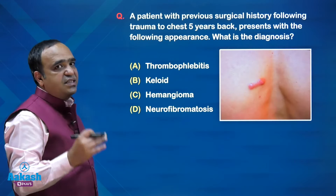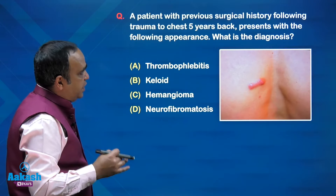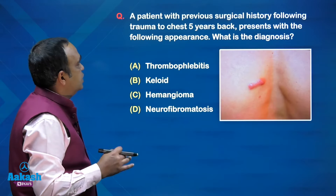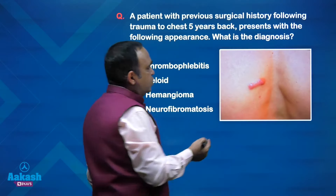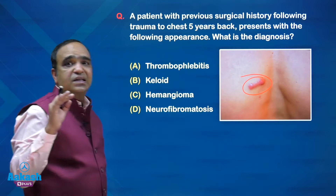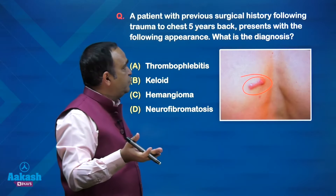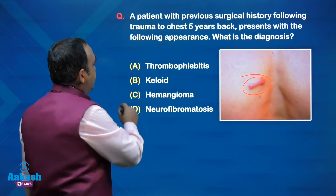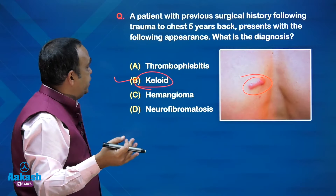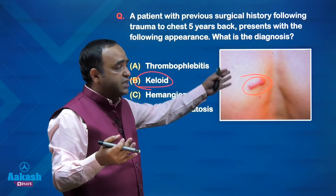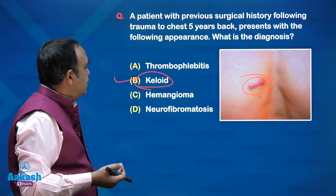A patient with previous surgical history, following trauma to the chest 5 years ago — this is the current appearance. A simple direct image-based spot diagnosis: overgrown scar tissue growing beyond the margins of the wound, with a classical picture in the pre-sternal area — a common site for keloids. The excessive scar tissue with history of trauma and the classical picture all fit keloid.